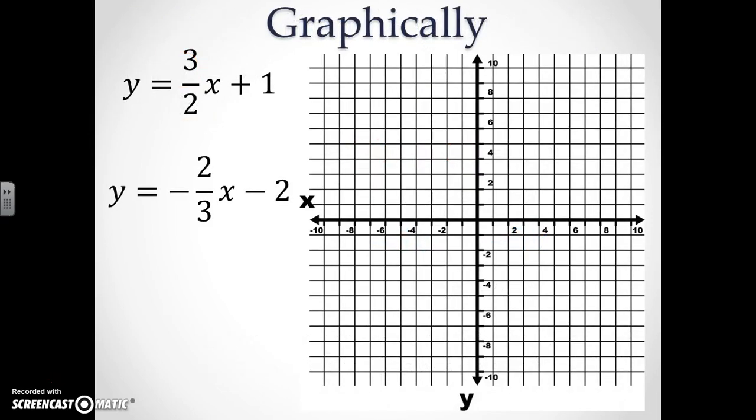Next we're going to look at two lines and graph them. If you notice, the slopes are negative reciprocals, which means that these lines will actually be perpendicular. Since the first equation has a y-intercept of positive 1, we're going to go ahead and plot 1 on the graph. The slope is 3 over 2, so we are going to rise 3 and run 2. You are going to continue with this pattern and then connect your points.